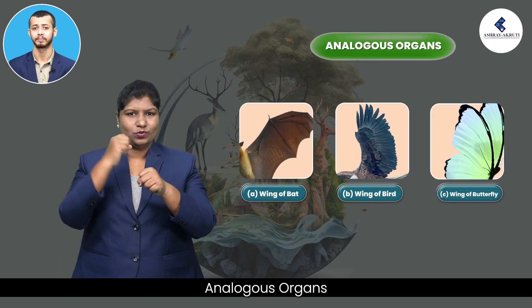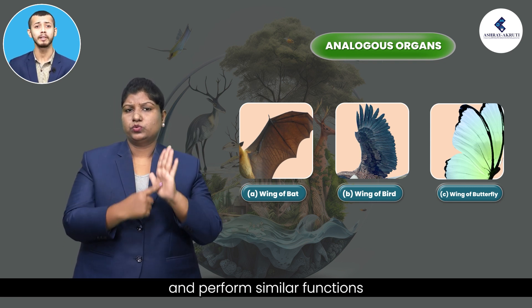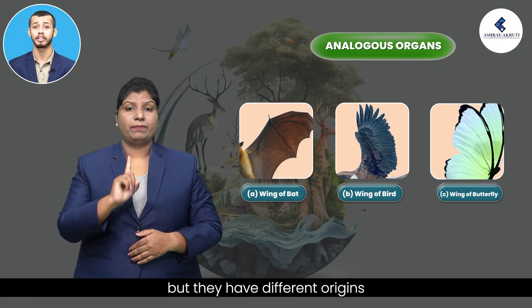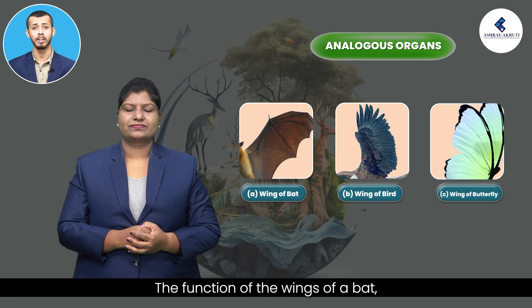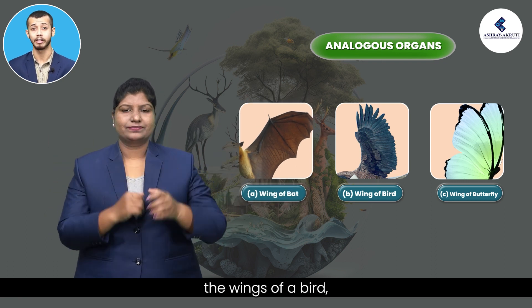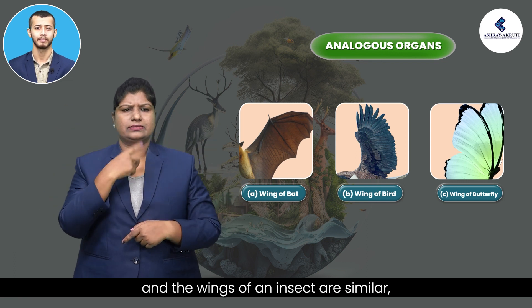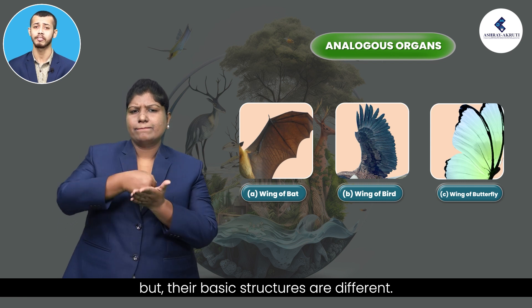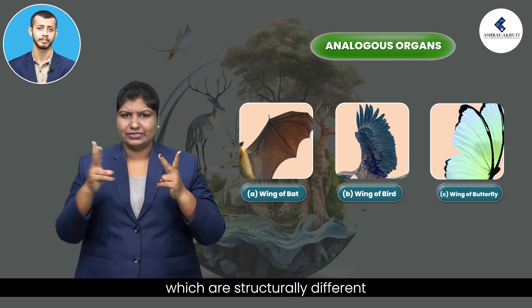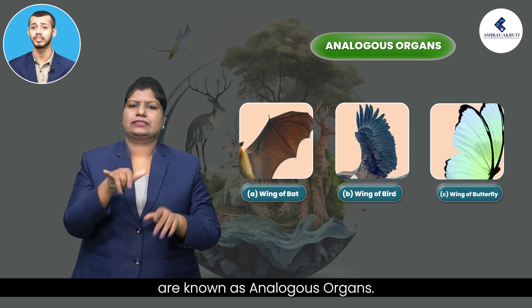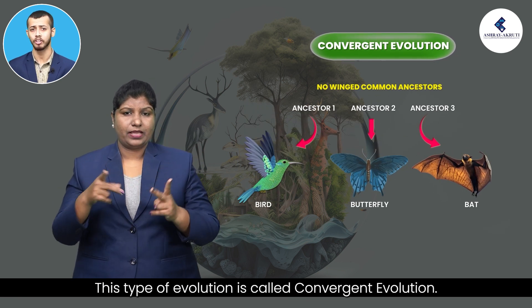Analogous organs look similar and perform similar functions but have different origins and developmental patterns. The wings of a bat, the wings of a bird, and the wings of an insect perform similar functions, but their basic structures are different. Organs that are structurally different but functionally similar are known as analogous organs. This type of evolution is called convergent evolution.